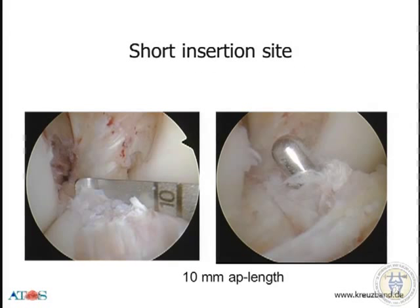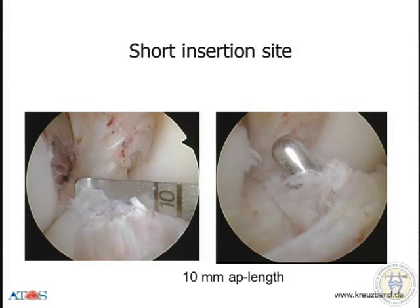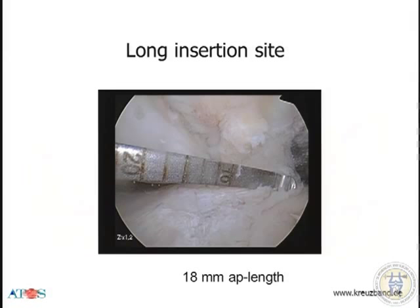We have short insertion sites, which I think is very important — especially in women we have a lot of smaller knees, and we have to take that into consideration when we reconstruct. A 10 mm insertion is a difficult case to reconstruct because the bone tunnel must be really precisely placed in the middle. And we also have very long insertion sites where it's easy to put a bone tunnel, or you can use two bone tunnels.